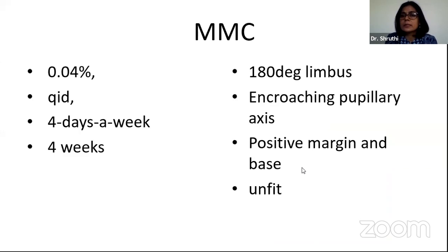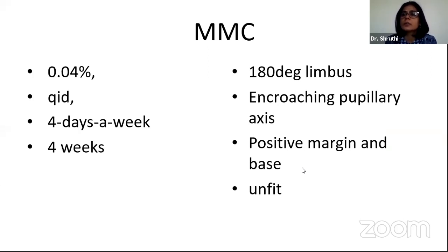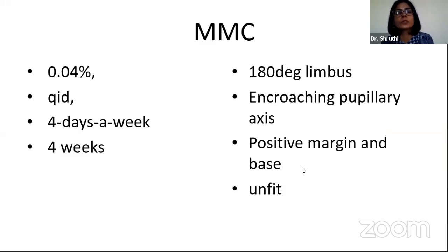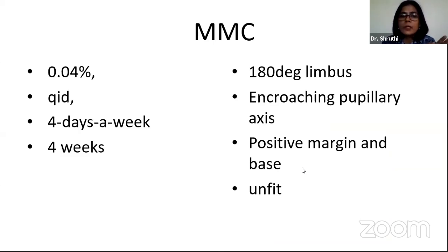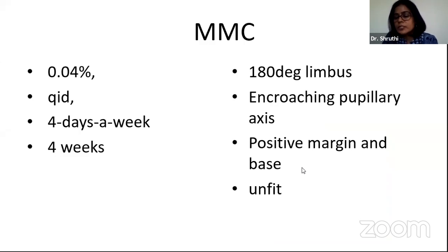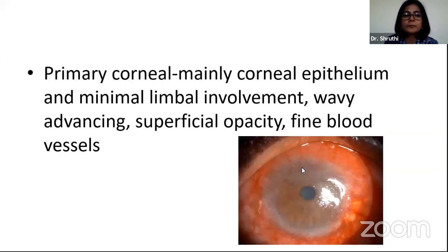Is there a role for mitomycin C? Yes — when there is 180 degrees of limbal involvement, when the tumor is encroaching on the pupillary axis, when histopathology shows positive margins and base, and in clinically unfit patients. The dosage is 0.04%, four times a day, four days a week, for four weeks — making one cycle. Because mitomycin C has certain corneal complications, we are slowly shifting to alpha interferon.